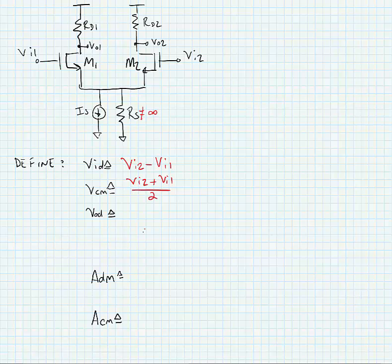Finally, we also have the output differential voltage. This is VO2 minus VO1.